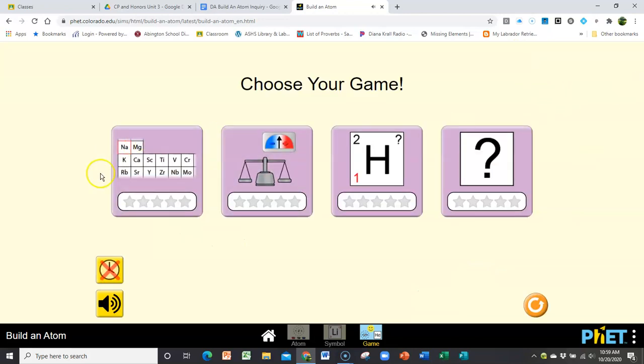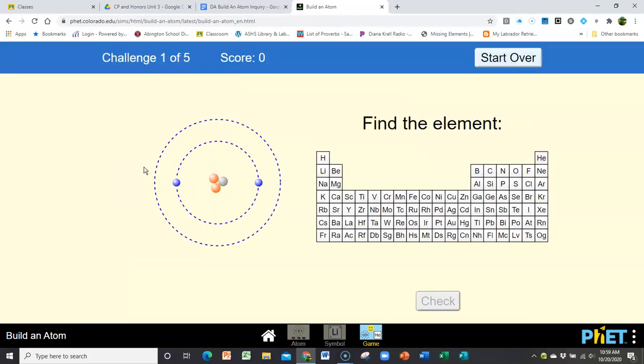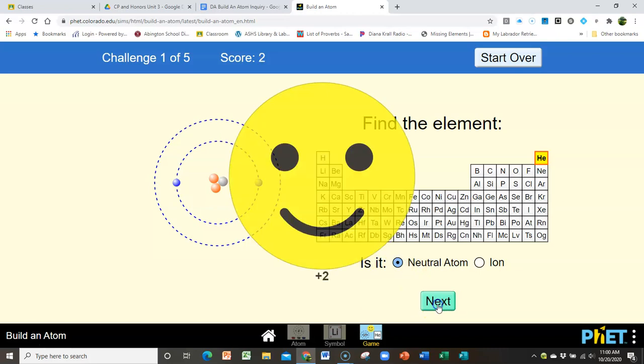And then start over. The final one, I call this the periodic table. And so you would go in here, and you would find the element. And in order to find this element, you would notice that there are 2 protons. So that means it has to be helium, and it has 2 protons, and it has 2 electrons. So it is neutral, and we're right.